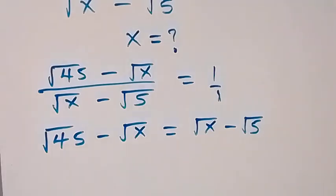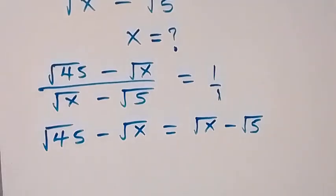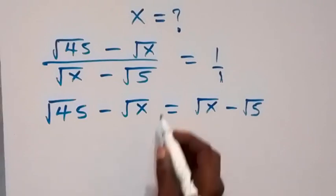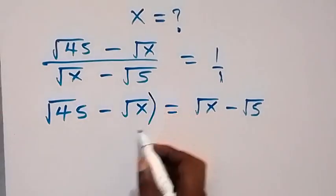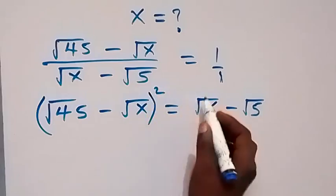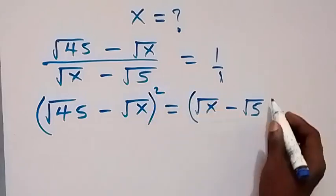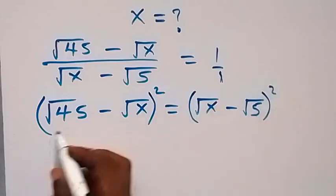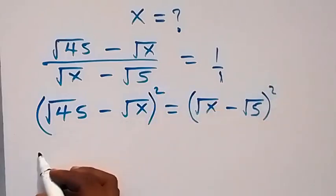From here, the first method — we want to use two methods. Let's use the first one. We can square both sides.